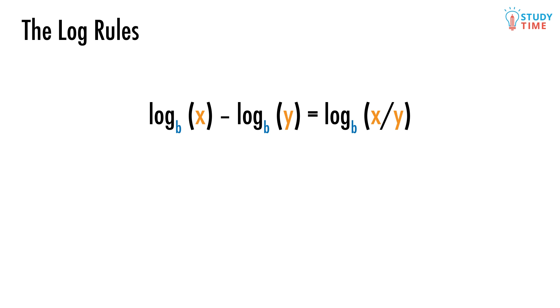Here's a typical example. Log base 4 of 6 minus log base 4 of 3. Since the bases are the same, we can just divide 6 by 3 to arrive at our new argument of 2. And of course, the base stays the same. So this equals log base 4 of 2.